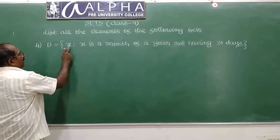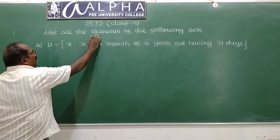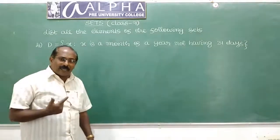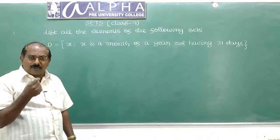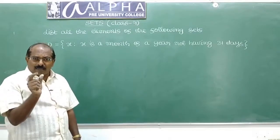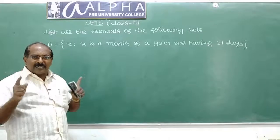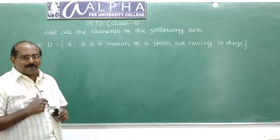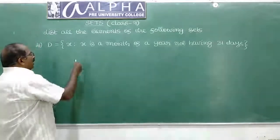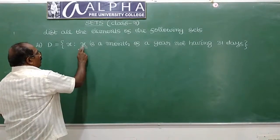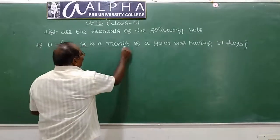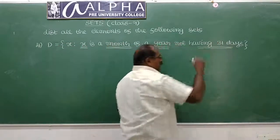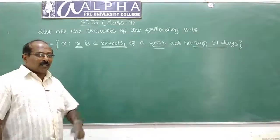This is set D given in set-builder form. We need to list all elements in roster form. Every element of D is a month of a year not having 31 days.